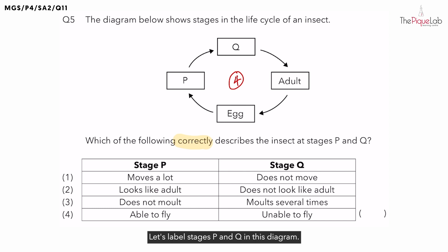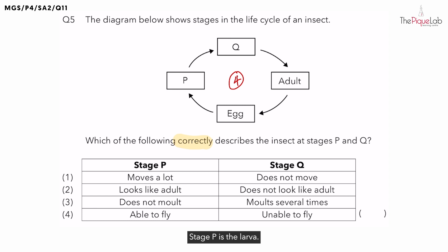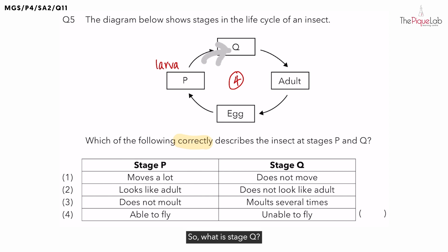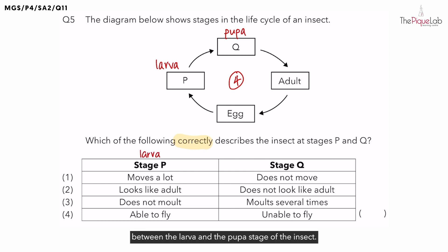Let's label stages P and Q in this diagram. Stage P comes after the egg stage — stage P is the larva. Stage Q comes after the larva stage — stage Q is the pupa. In other words, this question is comparing between the larva and the pupa stage of the insect.